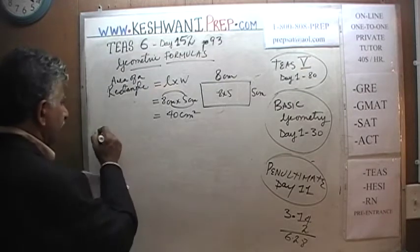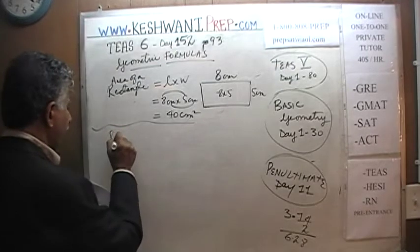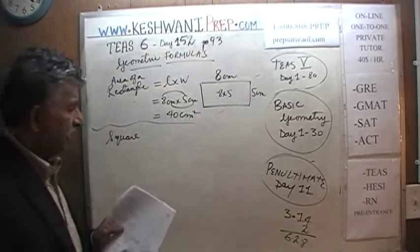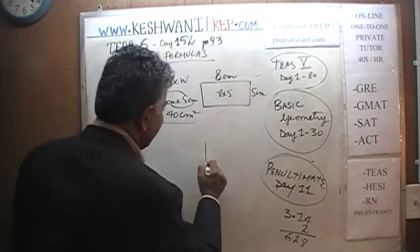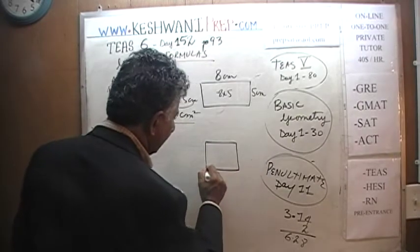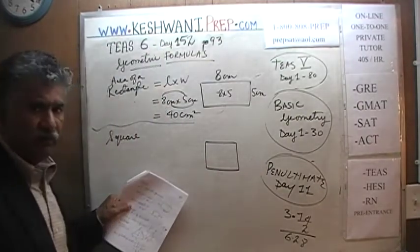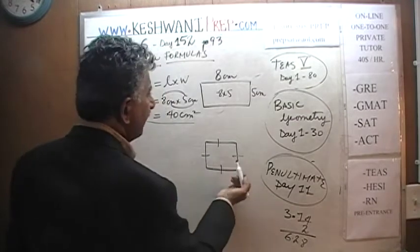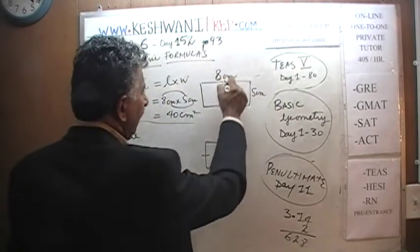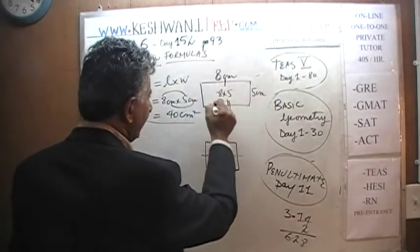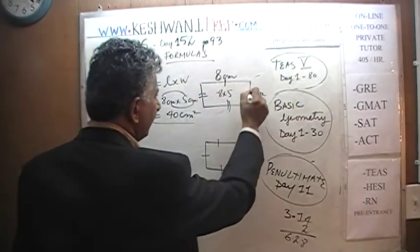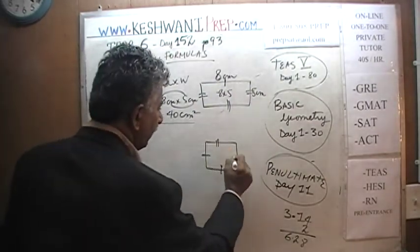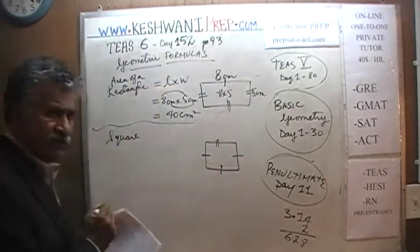What about a square? Instead of a rectangle, what if you had a square? A square is nothing but a rectangle — it is a special rectangle where all four sides are equal. In a rectangle, opposite sides are equal. But in a square, all sides are equal.